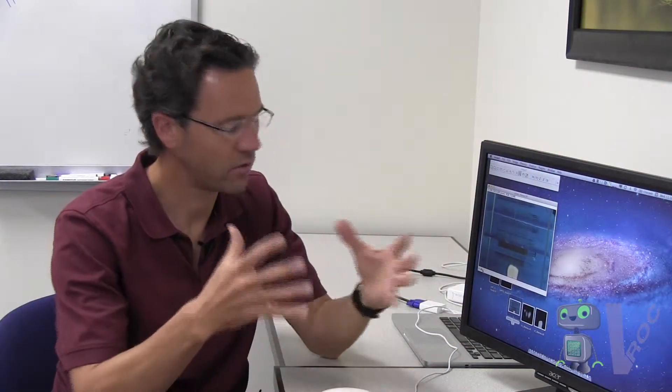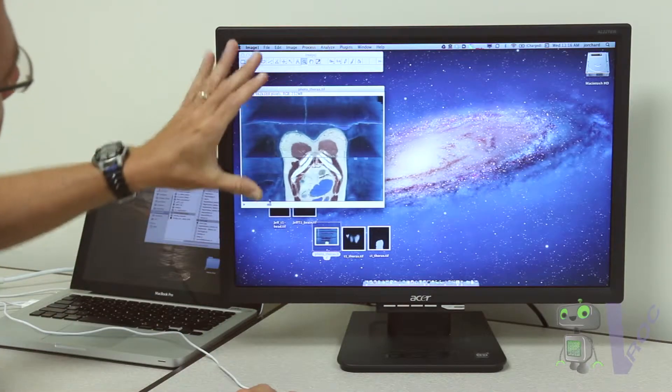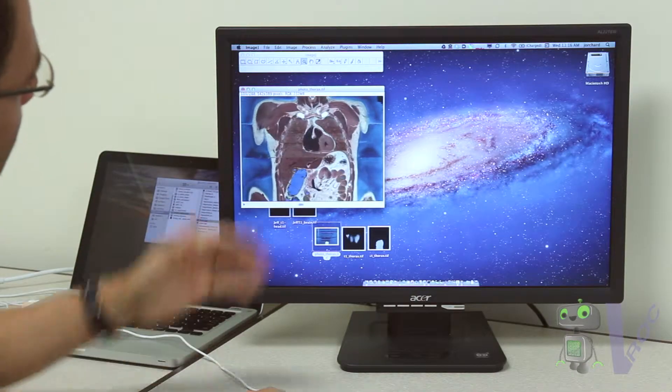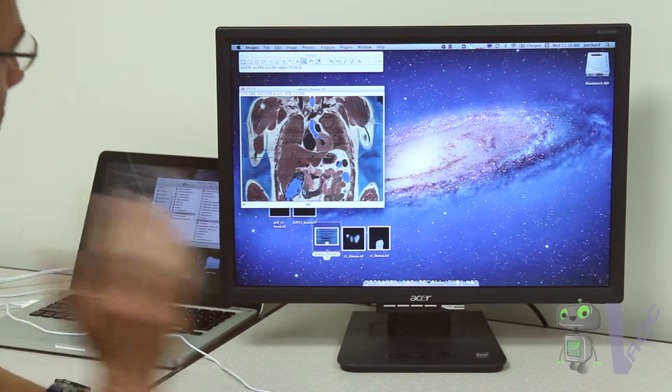They photographed each cross-section, so if you put all those photographs together, you get this volumetric dataset of his body. What we're looking at here is his torso—these are actual photographs. We also have MRI; here's a T1-weighted MRI of the same person.